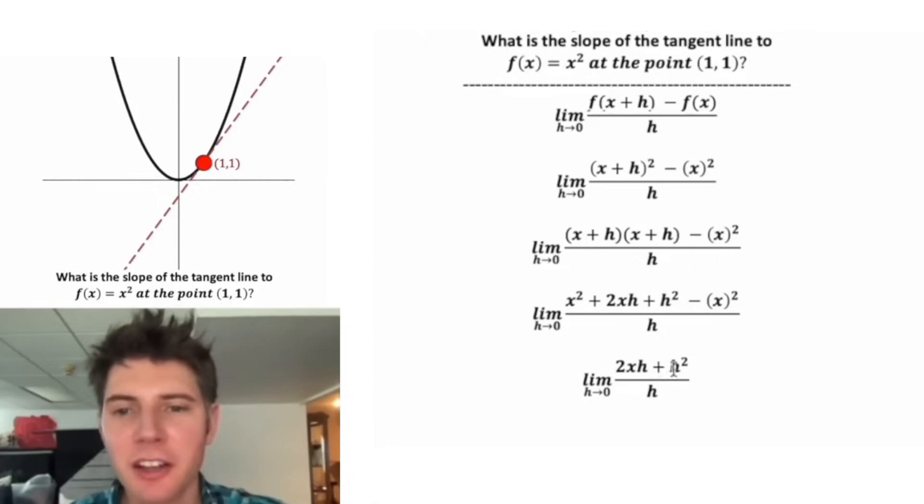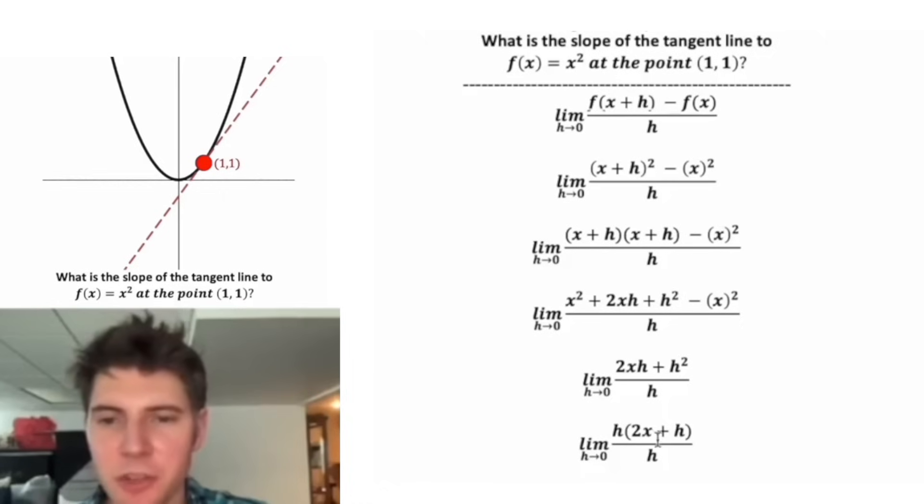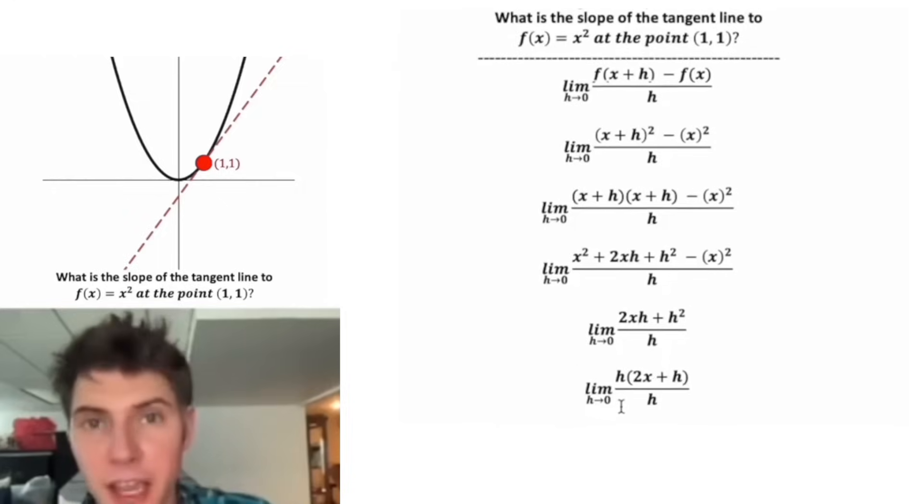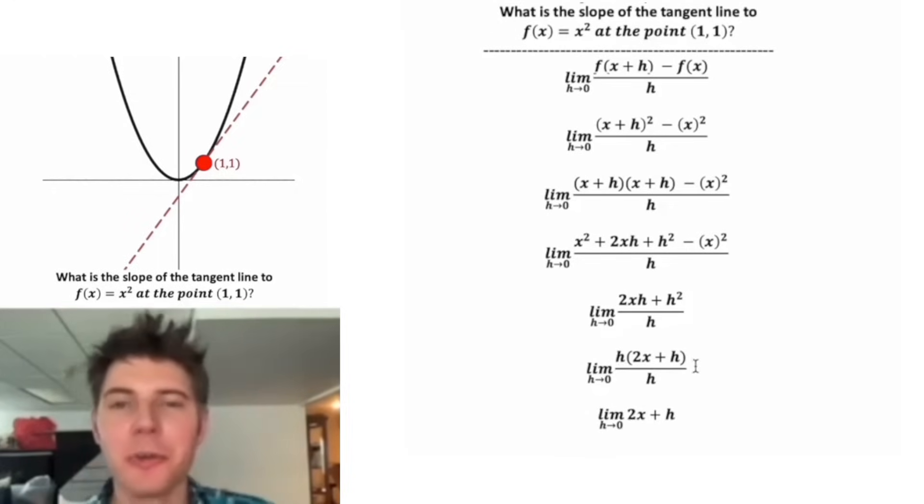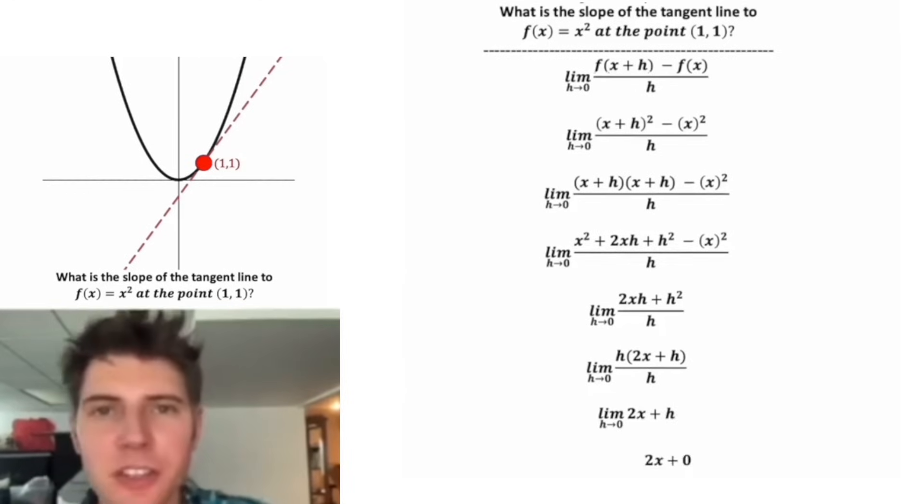Now I'm going to factor an h out of the top. So it'll look like this. We pull the h out. And to check this, h times 2x is 2xh. And h times h is h squared. These two h's will cancel, giving us just this here. Look what we just did. We no longer have an h in the denominator. We can now plug in zero for the h. And that gives us 2x plus zero, which is just 2x.